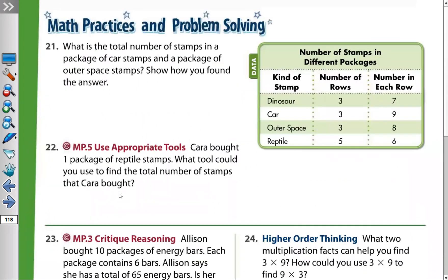Let's move to the next page — page 218, question number 21. What is the total number of stamps in a package of car stamps and a package of outer space stamps? Show how you found the answer. From the table of stamps in different packages: the car package has three rows with nine in each row, and the outer space package has three rows with eight in each row.